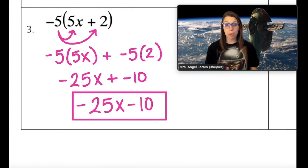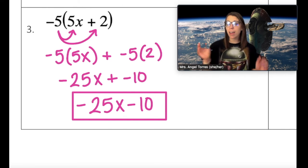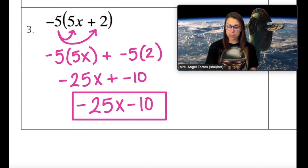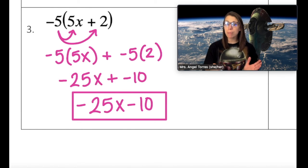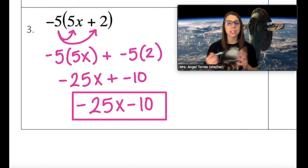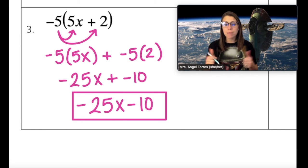For number 3, I used Distributive Property, but be careful — there was a negative involved. I multiplied negative 5 by 5x and negative 5 by 2, ending up with negative 25x and negative 10. Remember, adding a negative is equivalent to subtraction, so my constant is free and I have achieved my goal.